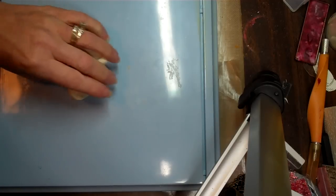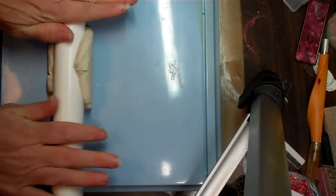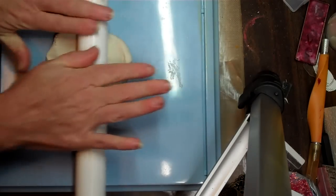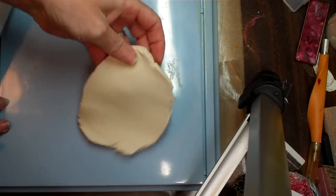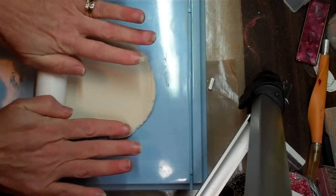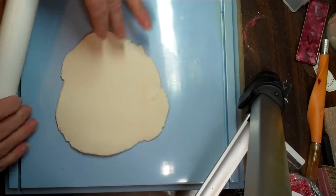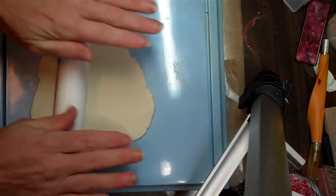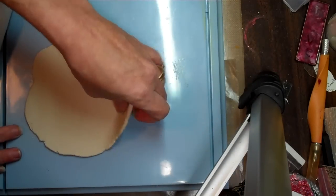And then I use a PVC pipe to roll it out. Now you're going to be rolling this out to about, you don't want it too thin, but you don't want it too thick either. So I would say about a quarter inch thick, and you want it to be a little larger than the shape that we just made out of the foil.